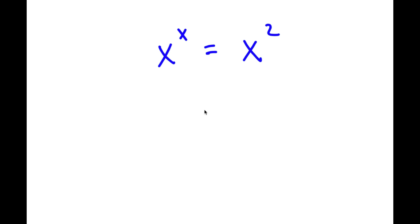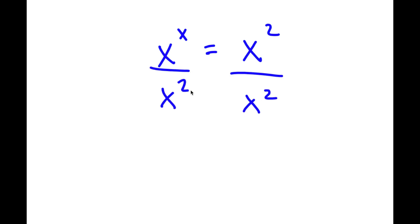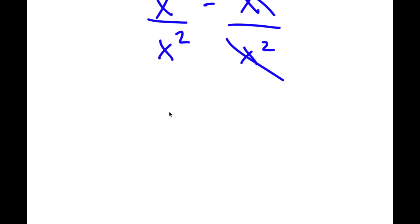So for this problem, I have x to the power of x is equal to x to the power of 2. To solve this, I'm going to first start by dividing both sides by x to the power of 2. These two cancel out, and now I'll be left with x to the power of x over x to the power of 2 is equal to 1.